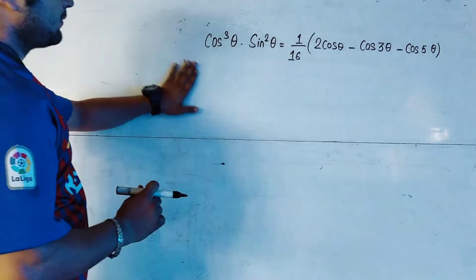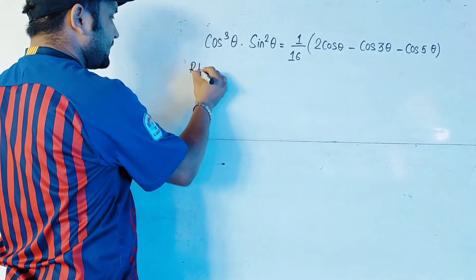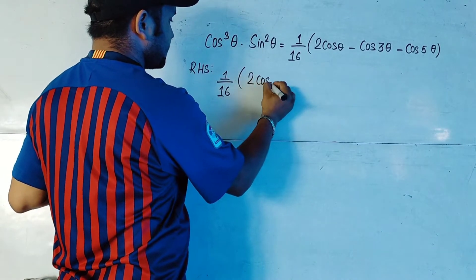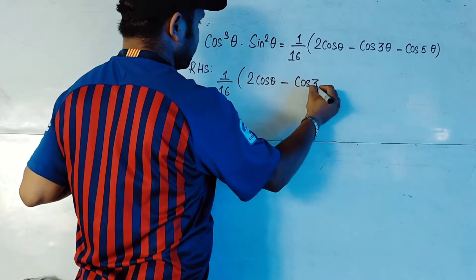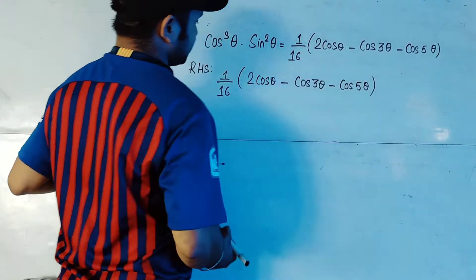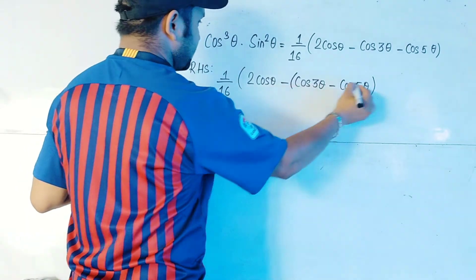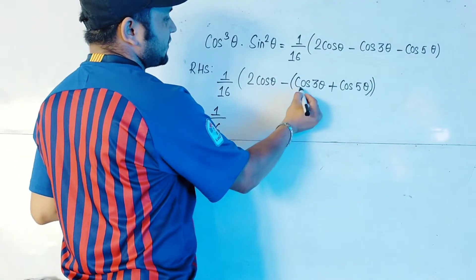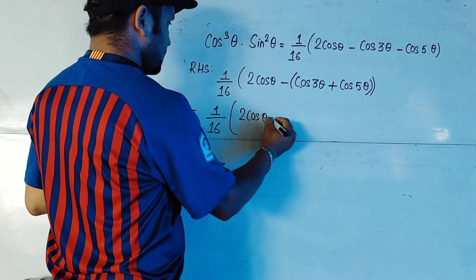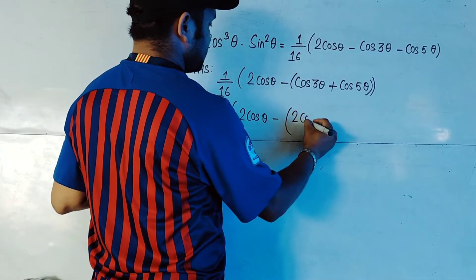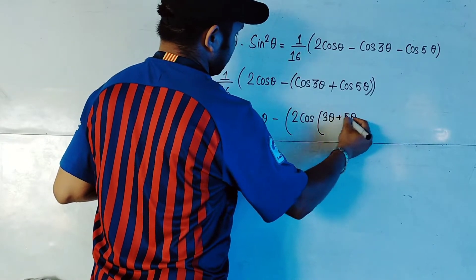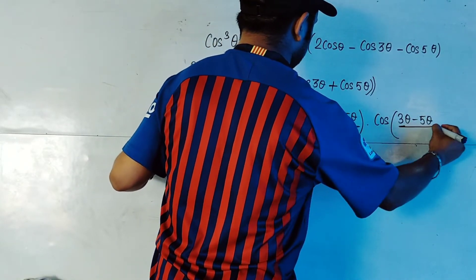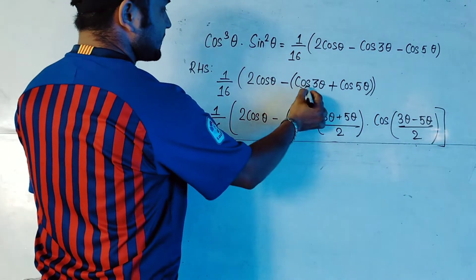Let us solve the problem starting from the right-hand side. We have 1/16 times (2cosθ - cos3θ - cos5θ). Putting cos3θ - cos5θ in a bracket, the minus sign changes to plus, giving us 1/16 times (2cosθ + (cos3θ + cos5θ)). We now apply the formula cos C + cos D = 2cos((C+D)/2)·cos((C-D)/2).